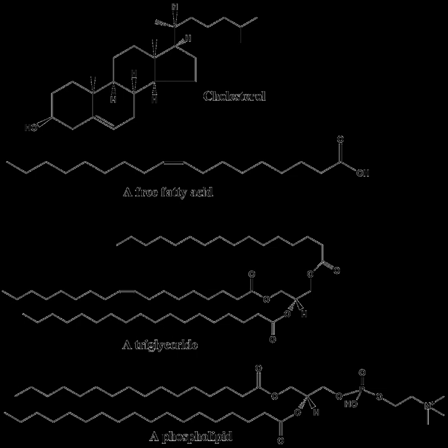Using this approach, lipids may be divided into eight categories: fatty acids, glycerolipids, glycerophospholipids, sphingolipids, saccharolipids, and polyketides derived from condensation of ketoacyl subunits, and sterol lipids and prenyl lipids derived from condensation of isoprene subunits. Although the term lipid is sometimes used as a synonym for fats, fats are a subgroup of lipids called triglycerides. Lipids also encompass molecules such as fatty acids and their derivatives including tri-, di-, and monoglycerides, and phospholipids, as well as other sterol-containing metabolites such as cholesterol. Although humans and other mammals use various biosynthetic pathways both to break down and to synthesize lipids, some essential lipids cannot be made this way and must be obtained from the diet.